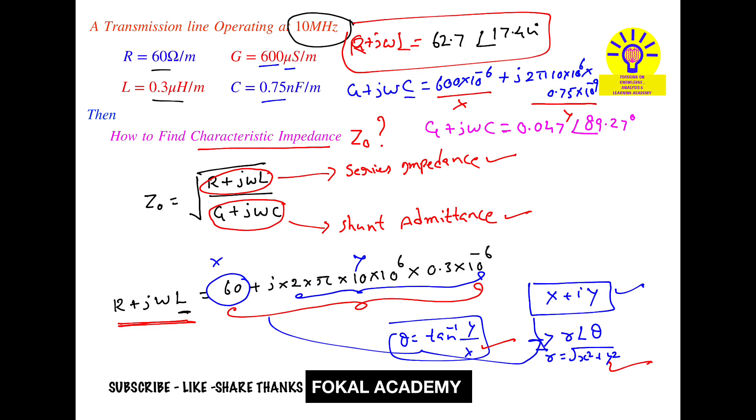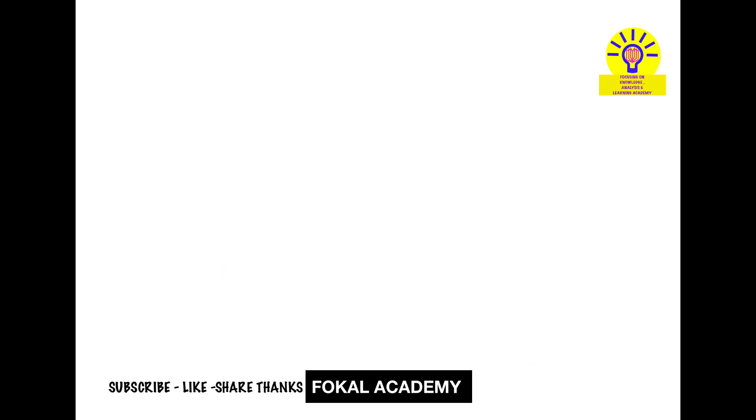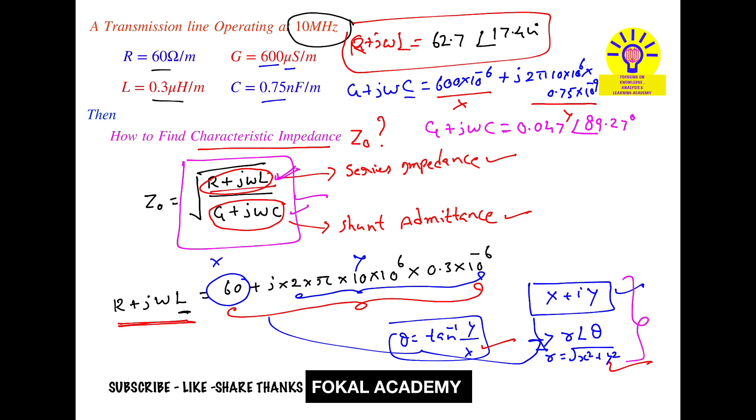Why are we converting to polar form? Because there is division here, and division between two complex numbers in rectangular form is very complex and takes a lot of time to simplify. If you convert to polar form, we can easily simplify it. Z₀ equals the square root of R + jωL, which is 62.7∠17.44°.